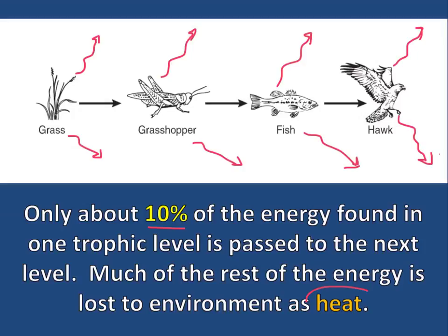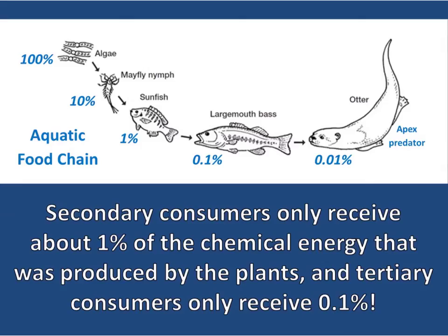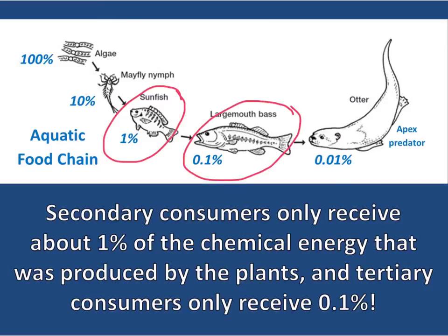Much of the rest of the energy is lost to the environment as heat. The chemical energy originally found in the producer population continues to be reduced by a factor of 10 each time it is passed to the next trophic level. Secondary consumers only receive about 1% of the chemical energy produced by plants, and tertiary consumers only receive about 0.1% of that energy.